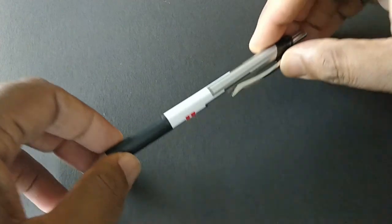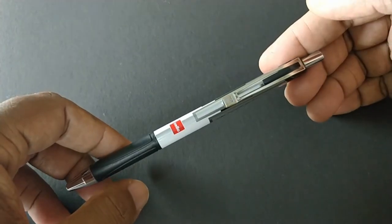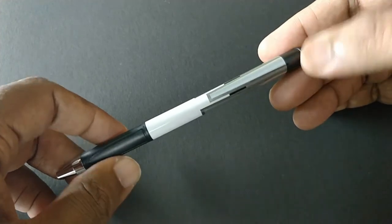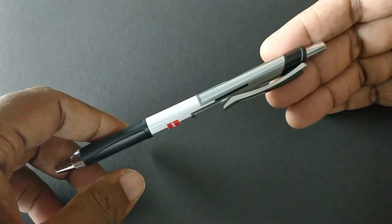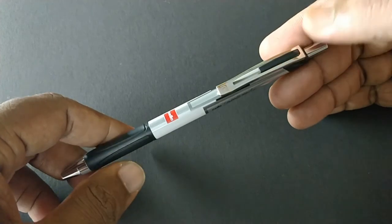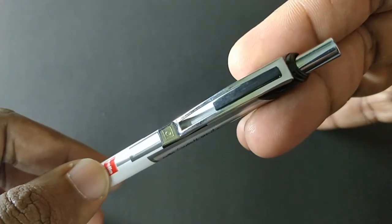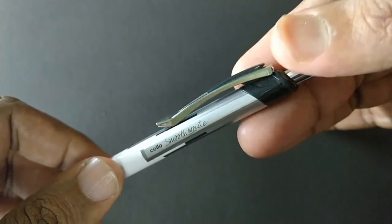Let's take a look at the Cello Smooth Write. This pen costs about rupees 10. This is a ballpoint pen. The design of the pen looks nice. It has a metal clip with plastic insert.